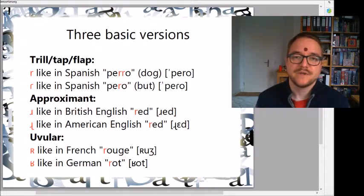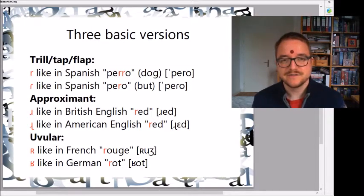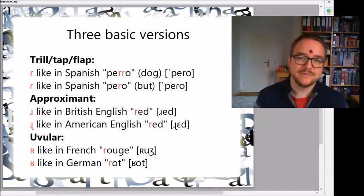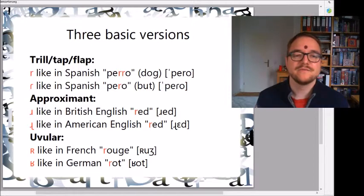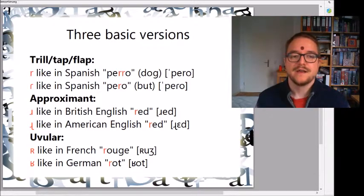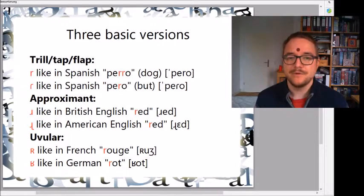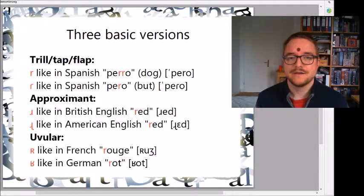I would like to emphasize that I see three basic versions of R sounds — the borders are not always very clear, but I see three basic versions. First, the trill, tap, or flap sounds, like for example the Spanish R, like in 'perro' which means dog, or the flap sound R like in Spanish 'pero' which means 'but'.